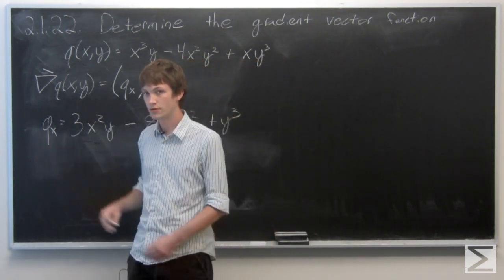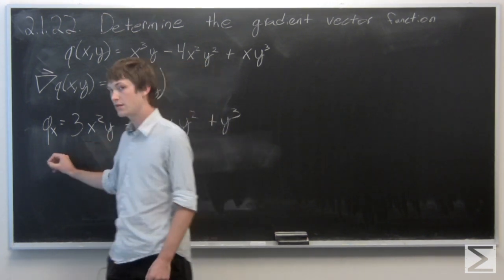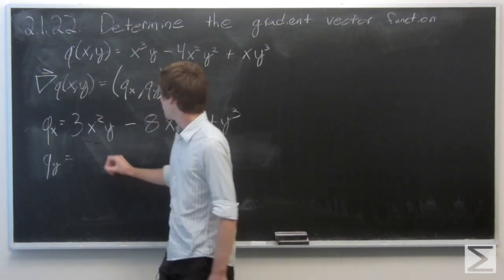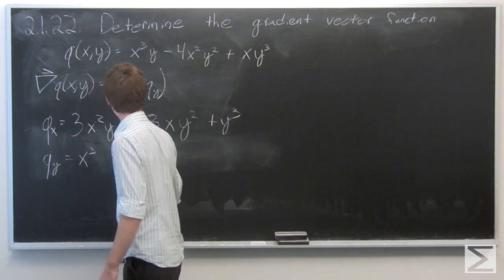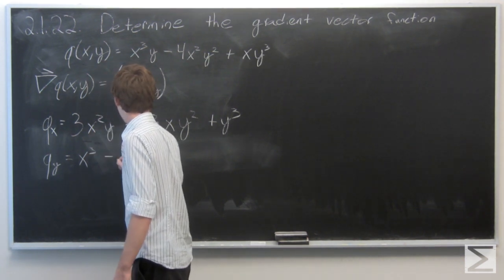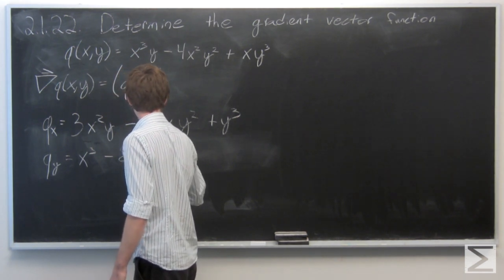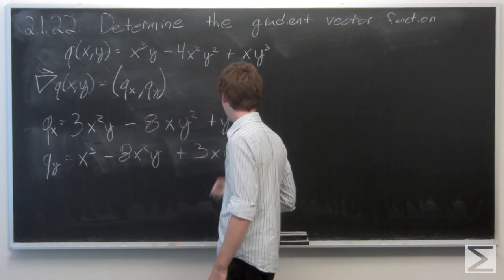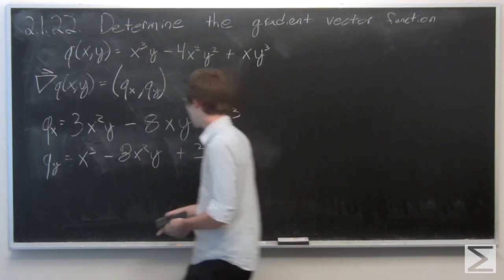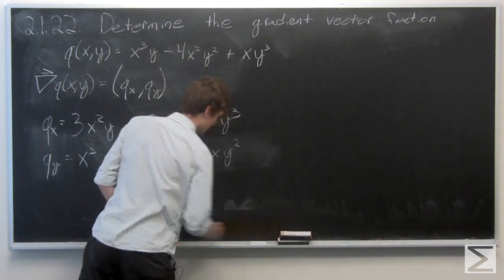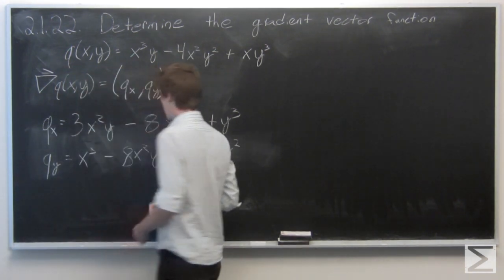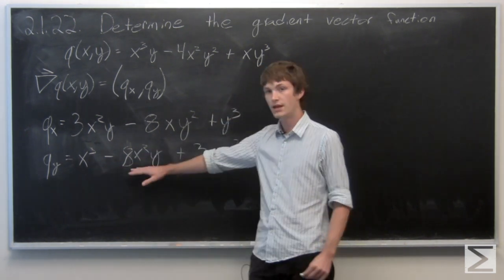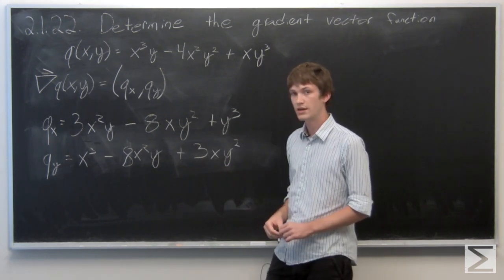So now we're going to take the partial derivative of q with respect to y for the second component. We see that the partial derivative with respect to y is x cubed minus 8x squared y plus 3xy squared.